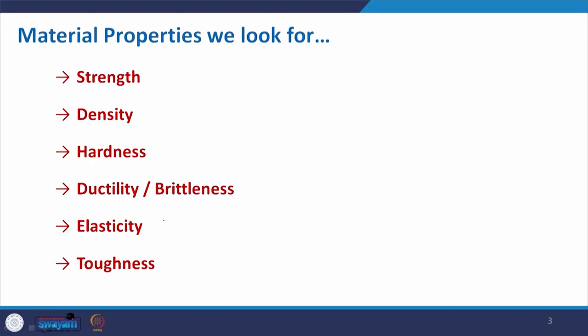There are six basic properties we look for in a building or structural material: strength, density, hardness, ductility or brittleness, elasticity, and toughness. These are the six basic properties of a material we are looking for.